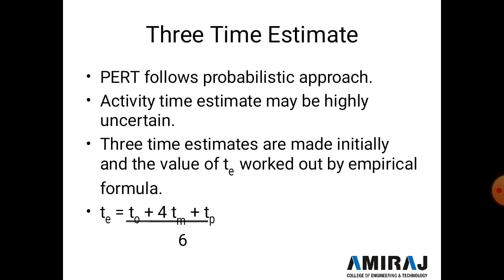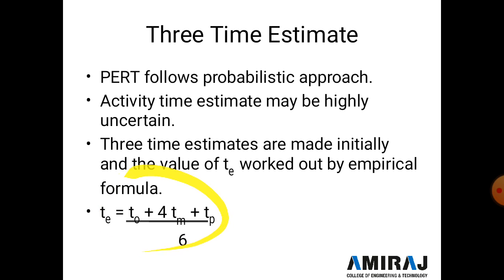In a PERT diagram, three times are given: to (optimistic time), tp (pessimistic time), and tm (most likely time). The estimated time te is calculated from these three values using the formula. We will discuss to, tm, and tp in detail in the next slides.